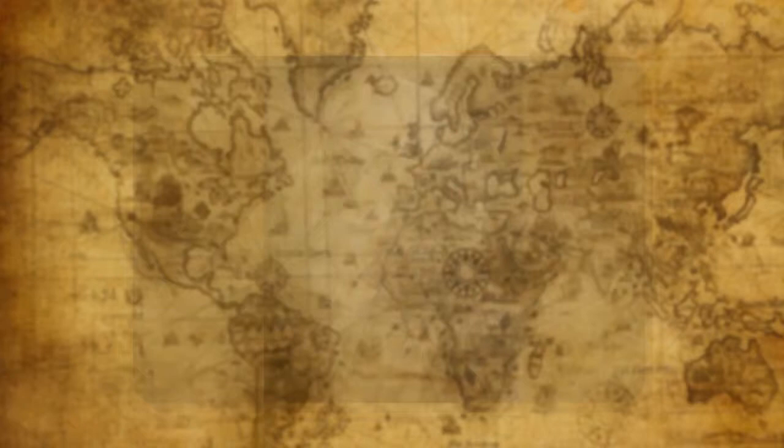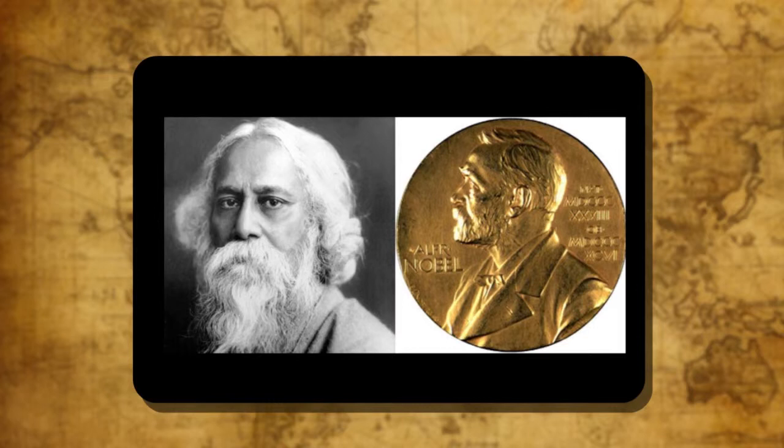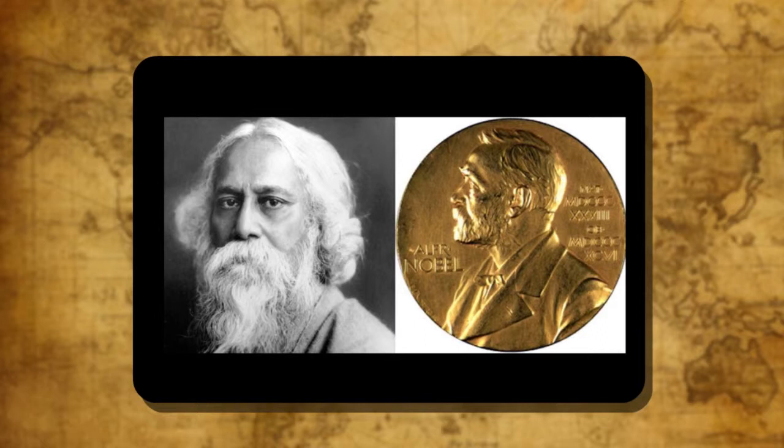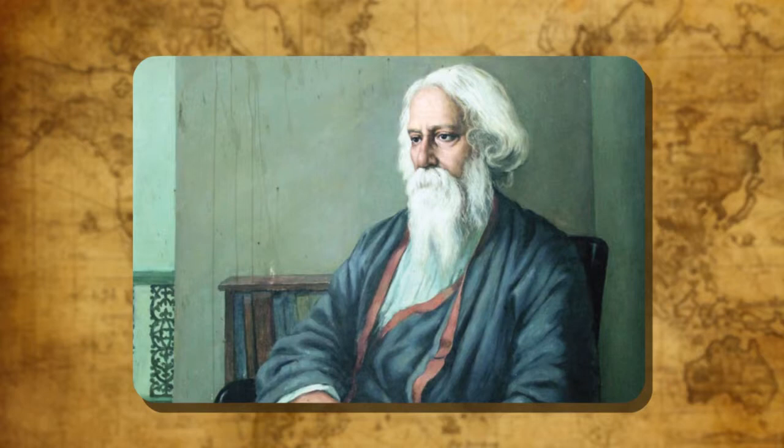Mulk Raj Anand, Raja Rao and R.K. Narayan wrote in English. In fact, Rabindranath Tagore is the very soul of this period. He was a versatile genius who shines like a star on the literary horizon of India. He won great name and fame for his country when he won the Nobel Prize, the highest international award for literature, for his immortal work Gitanjali. His writings contain a combination of ancient Indian traditions and the new European consciousness.